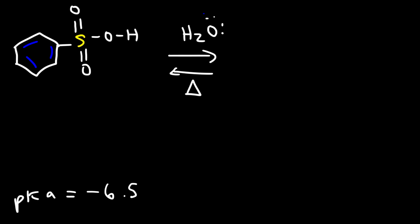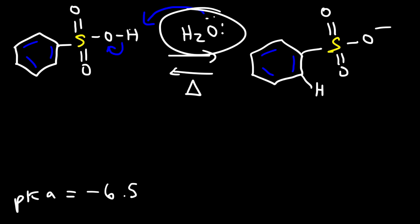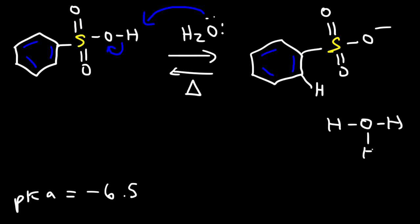So water, as a weak base, will immediately deprotonate the acid. Now we have the conjugate base of benzene sulfonic acid. Water reacted with H, giving us the conjugate acid of water — the hydronium ion, H₃O⁺. In the next step, the double bond is going to act as a nucleophile, reacting with H₃O⁺, which in this case is the electrophile.